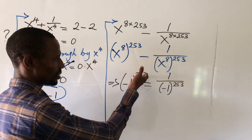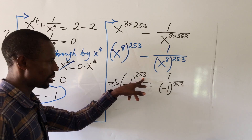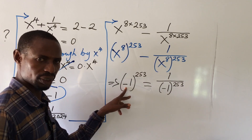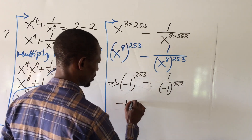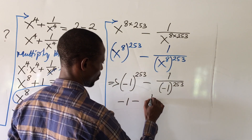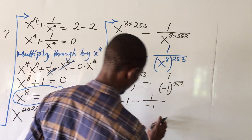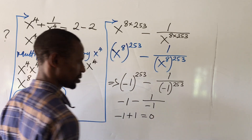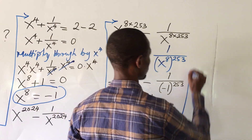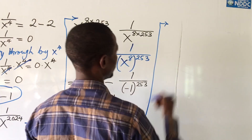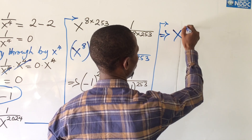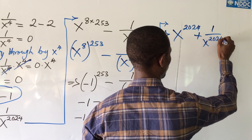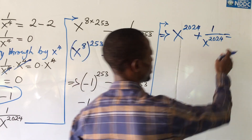Now, minus 1 to the power of 253 — since 253 is an odd number, this gives us minus 1. So we have minus 1 minus 1, all over minus 1. The numerator is minus 1 minus 1 — wait, this is minus 1 all over minus 1. This minus multiplied by this minus gives us plus, so we have minus 1 plus 1, which equals 0. Therefore, x to the power of 2024 minus 1, all over x to the power of 2024, is equal to 0.